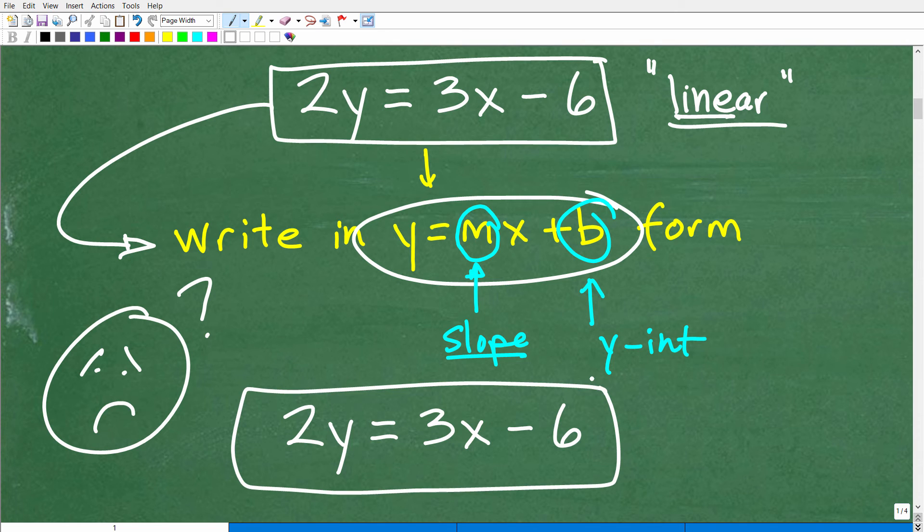All right, so the objective here is to write this equation into y equals mx plus b form. But basically here, this is pretty close, and we want y. Here we have 2y is equal to 3x minus a number, okay? What we need to do is get that y by itself. So effectively, what we need to do is solve for y. Okay, we have 2y. We just want y by itself. So how can we do this?